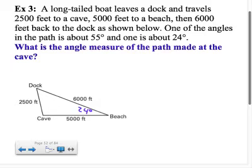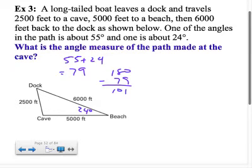The 55—I mean you can figure out what the third angle has to be here. You have 55 plus 24, that's 79 degrees, and when you take 180 minus 79, the biggest angle here has to be 101. Obviously the largest angle has got to be the one at the cave because it's across from the longest side. So really to answer the question, what is the angle measure of the path made at the cave, it's very simply 101.